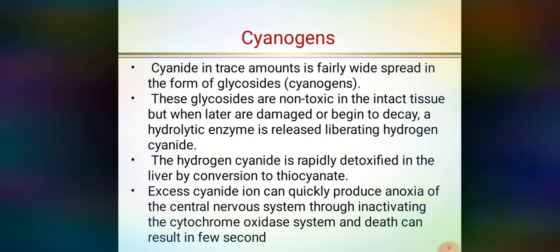Cyanogens are a quite important type of anti-nutritional factor present in legumes. Relatively high levels of cyanogens can be found in legumes or some pulses.